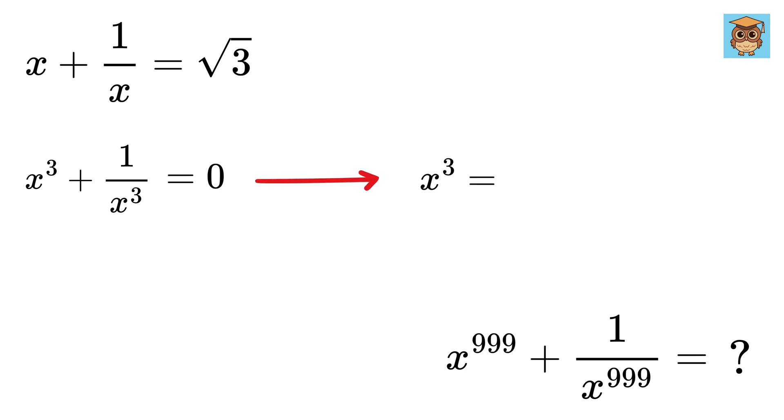Amazing! So we get x cube equals minus 1 over x cube. Take this here, and we have x to the sixth power equals negative 1. That is simply awesome!